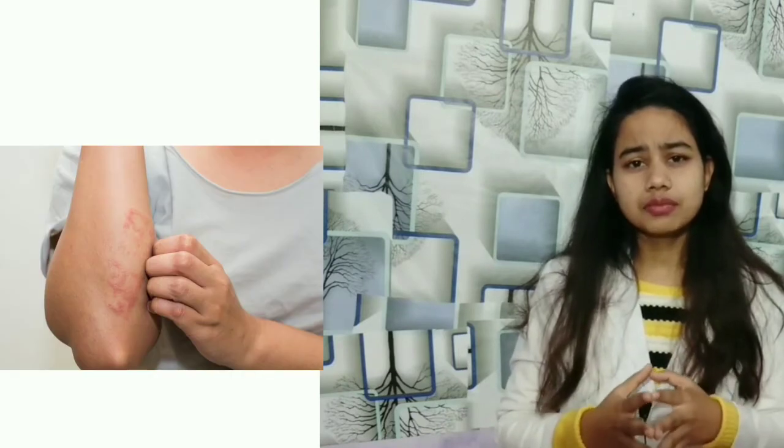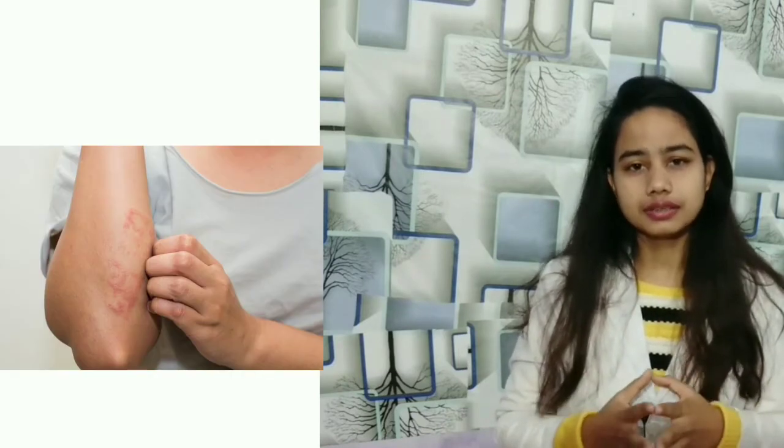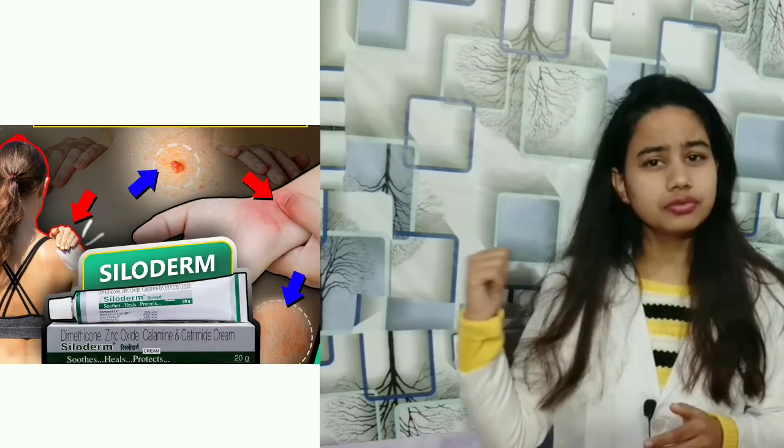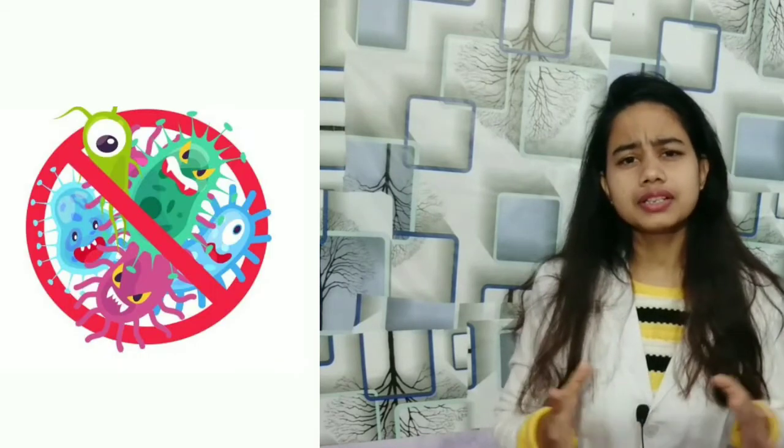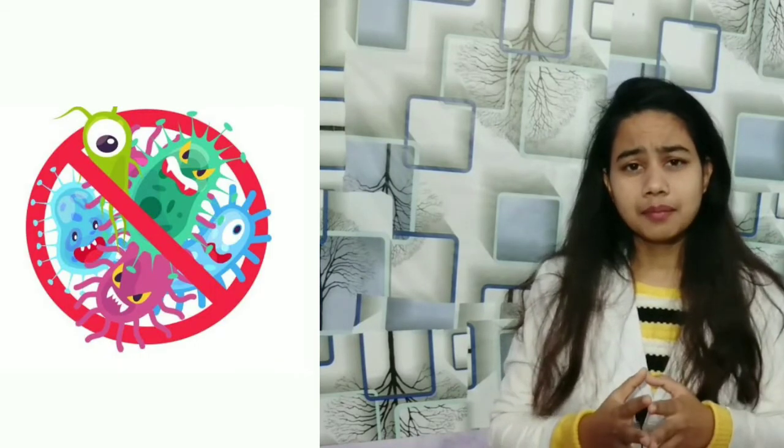Calamine has an antipruritic property. Antipruritic property means it is used for various types of skin conditions like eczema and allergic diseases. It is also used as an antiseptic, helping to fight against bacteria and viruses. In this case, it is used in Siloderm Cream.